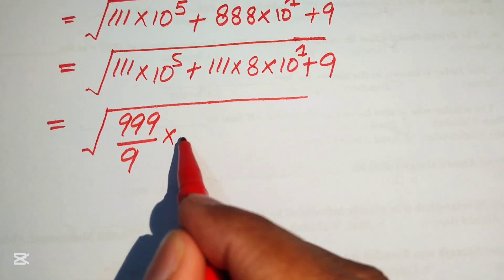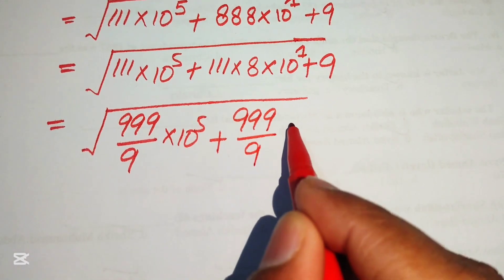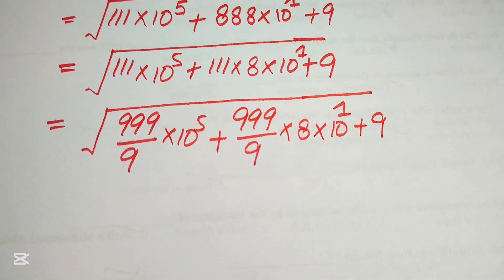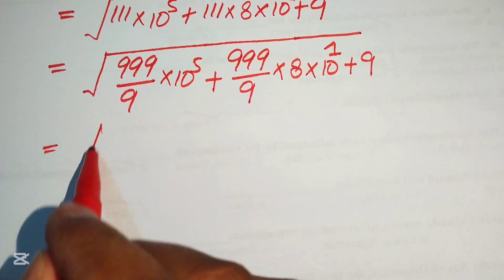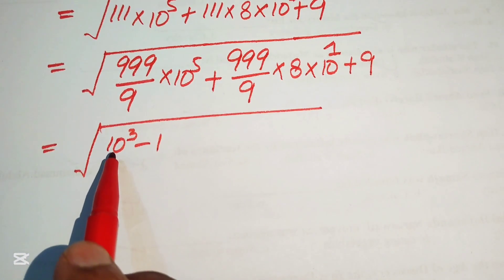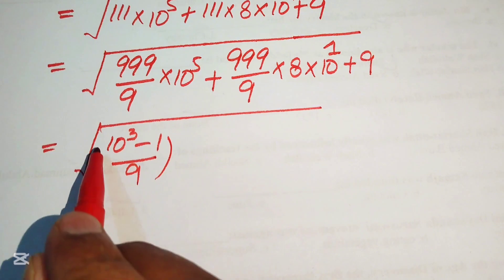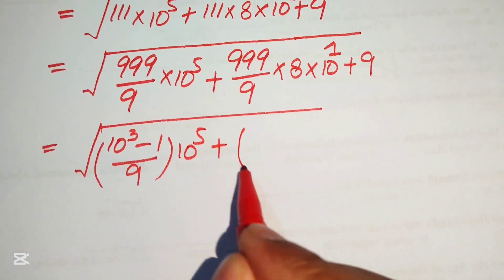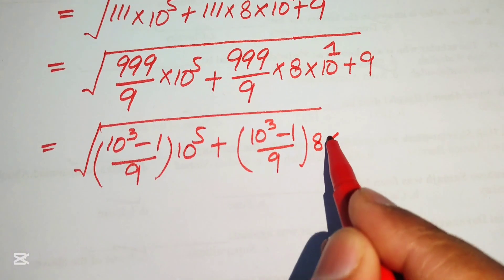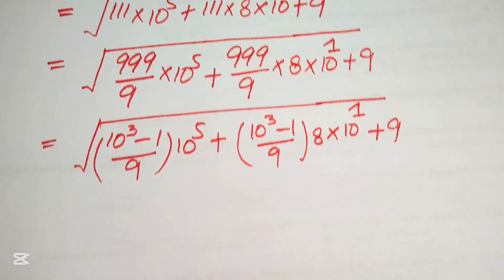This is multiplied by ten raised to power five, plus triple one (111) written as triple nine (999) divided by nine, multiplied by eight, multiplied by ten raised to power one, and plus nine. Now we further write triple nine (999) as ten raised to power three minus one, because ten raised to power three equals one thousand and one thousand minus one gives triple nine (999). It is divided by nine and multiplied by ten raised to power five. Similarly, we write the other expression as ten raised to power three minus one, divided by nine, into eight multiplied by ten raised to power one, plus one, plus nine.